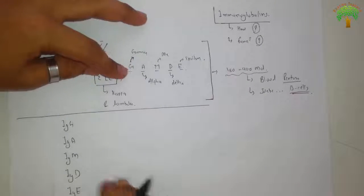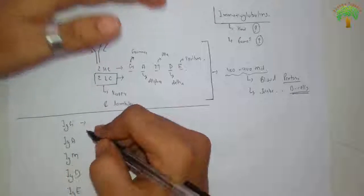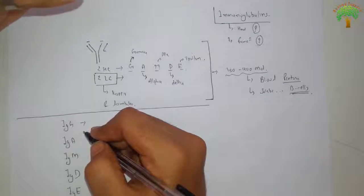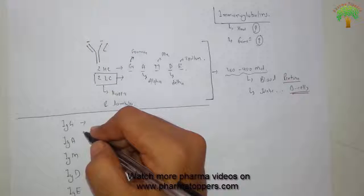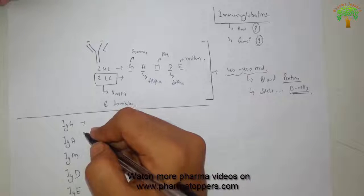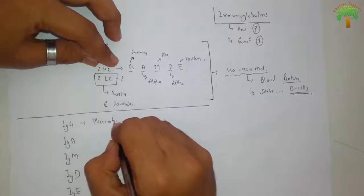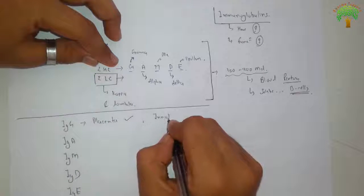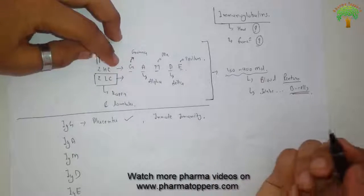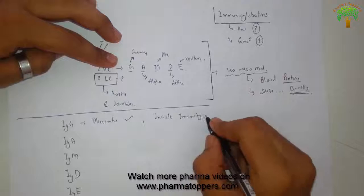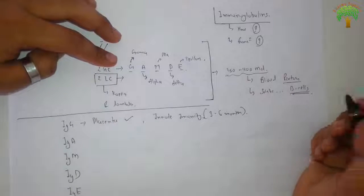Starting with IgG, this one is the only antibody which can cross the placental barrier and can affect the fetus. It is responsible for the 3 to 6 months immune protection in newborns, which is the innate immunity. So it can cross placenta and is part of innate immunity for 3 to 6 months.